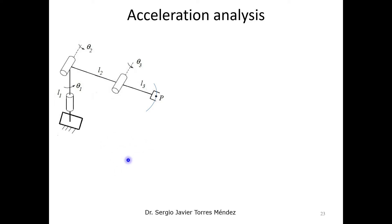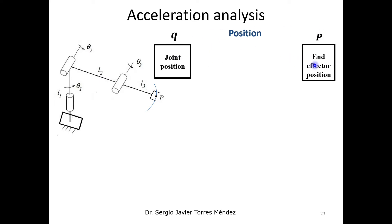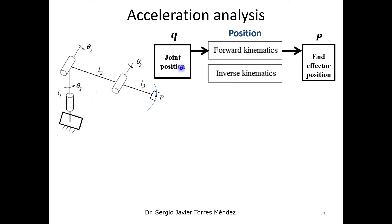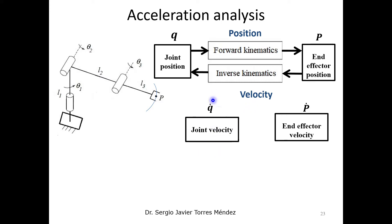These kinematics analyses suppose that you have a serial robot with n degrees of freedom and m specific coordinates for the end-effector. When we start the kinematics analysis, we start with the position problem. In the position problem, you need to relate the end-effector position and the joint positions. The first study is with the forward kinematics model, which receives as input the joint positions in order to obtain the end-effector position. In the inverse form, we have the inverse kinematics problem, where you receive as input the end-effector position in order to obtain the joint positions.